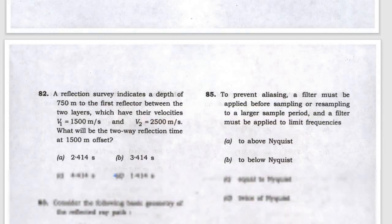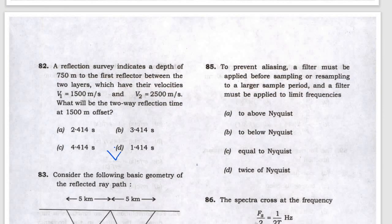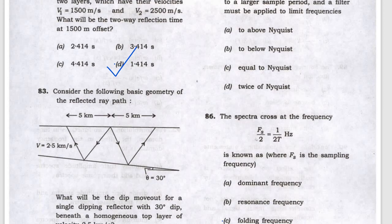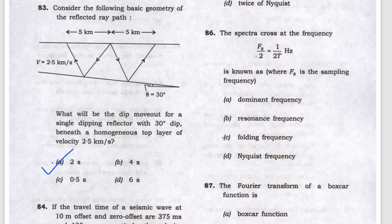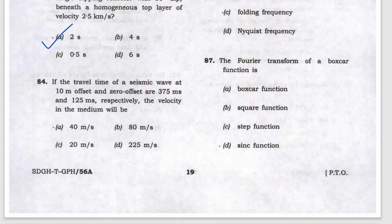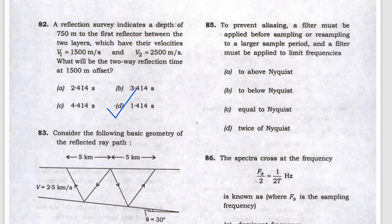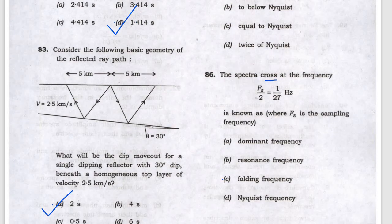The seismic reflection answer is 2 seconds. This is the enum effect, giving answer A. To prevent aliasing, a filter must be applied to limit frequency above the Nyquist. There's a language problem here, so it can be above Nyquist or equal to Nyquist. The spectral crossover frequency is the Nyquist frequency, also called the folding frequency.